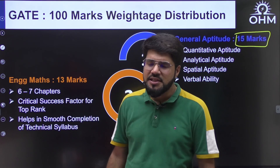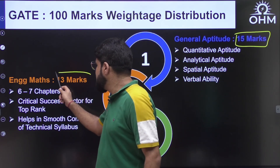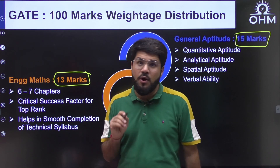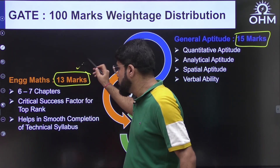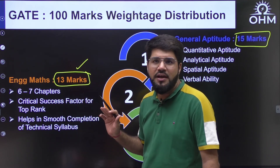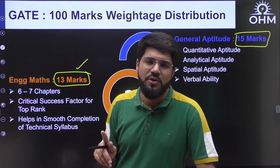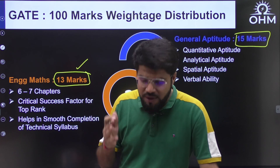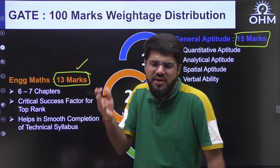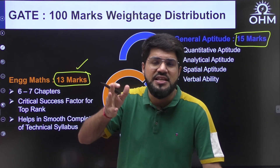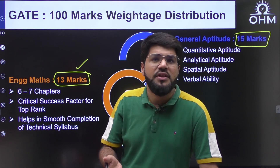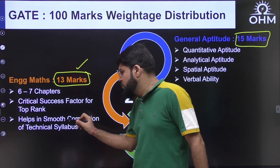Engineering Mathematics: from 2021 they have fixed its weightage at 13 marks, comprising six to seven different chapters. Maths is a very critical success factor for top rank. The weightage is good — once you see the technical subject weightages, you'll find that maths has more weightage than each individual technical subject. If you are strong in maths, you become a good engineer. Everywhere in technical — complex numbers, differential calculus, maxima-minima, integral calculus, differential equations — you need all of these.